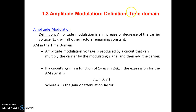Amplitude modulation is defined as an increase or decrease of the carrier voltage with all other factors remaining constant. Specifically, the amplitude of the carrier is changed in accordance with the amplitude of the modulating signal — the message signal. The carrier signal is a high frequency signal and the message signal is a low frequency signal.